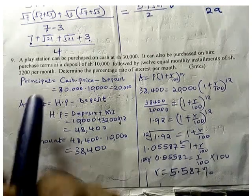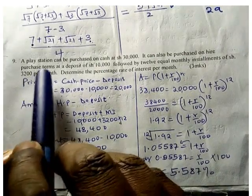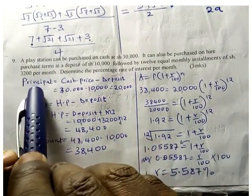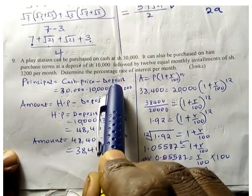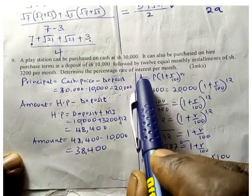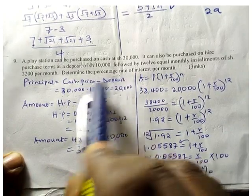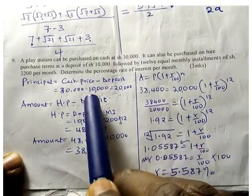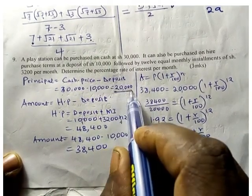In this case, when we have a combination like this, the principle will be equal to cash price minus deposit. We need to find the principle so we can use it in the formula. The principle is equal to 30,000 minus the deposit, so our principle is 20,000.